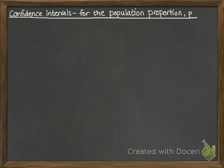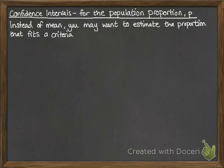Our last little bit on confidence intervals is applying it to a population proportion P. So instead of working out a mean, you might want to estimate the proportion of a population that fits a given criteria, which you would term as being a success. Thinking about this in a binomial situation, where you would have something you could call a success or failure, and you would estimate the proportion of the population from your sample based on the successes that happened in your sample.